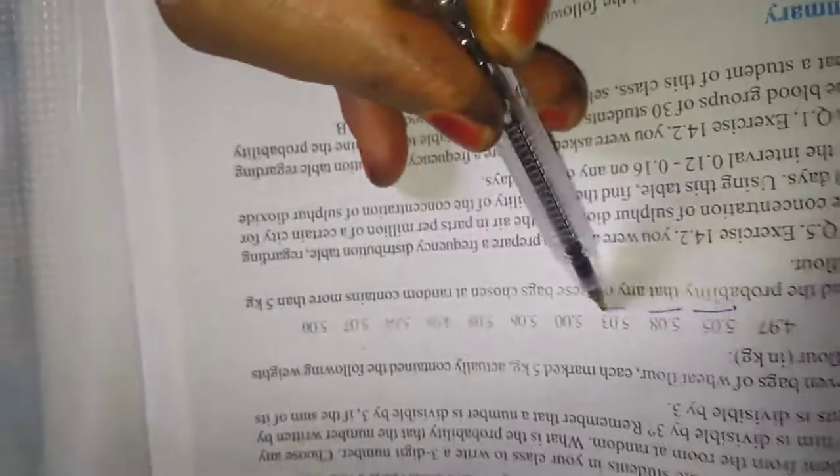Next question. 9th and 10th is activity. We will move to the 11th question. A bag of wheat flour, each marked 5 kg, actually containing the following weights of flour. Find the probability that any of these bags chosen at random contains more than 5 kg of flour. More than 5 kg means, see here. 1, 2, 3, this is exactly 5. So 3, 4, 5, 6, 7, this is exactly 5. So 7 by how many bags totally we have? 11. So 7 by 11. This is the answer.